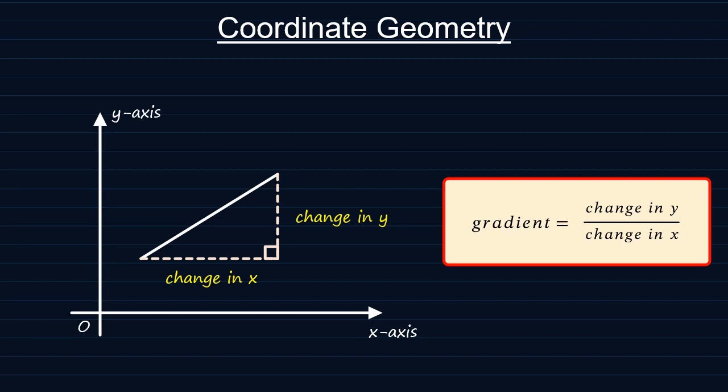In this lesson we're going to learn how we can find the gradient of a line given the coordinates of two points on the line.